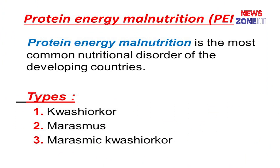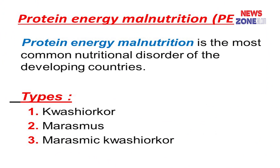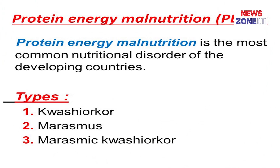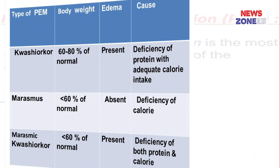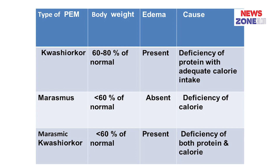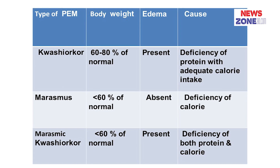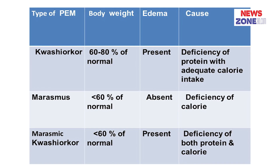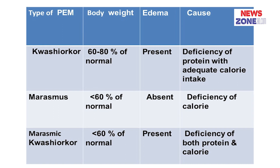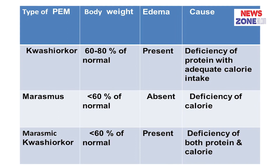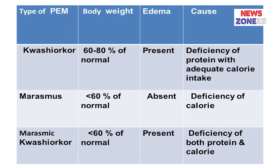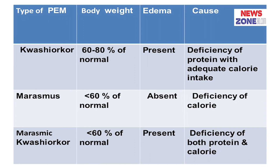Protein energy malnutrition is divided into three types: one is kwashiorkor, another is marasmus, and the last one is marasmic kwashiorkor. Kwashiorkor occurs due to deficiency of protein, marasmus occurs due to deficiency of calorie, and marasmic kwashiorkor occurs due to deficiency of both protein and calorie.